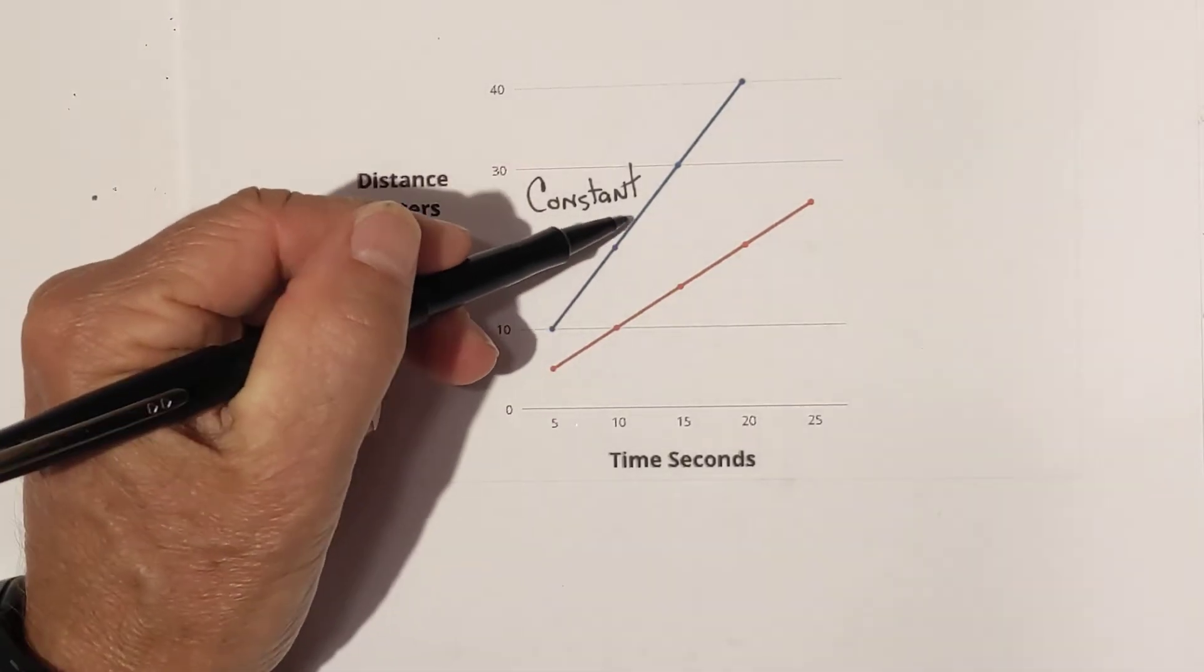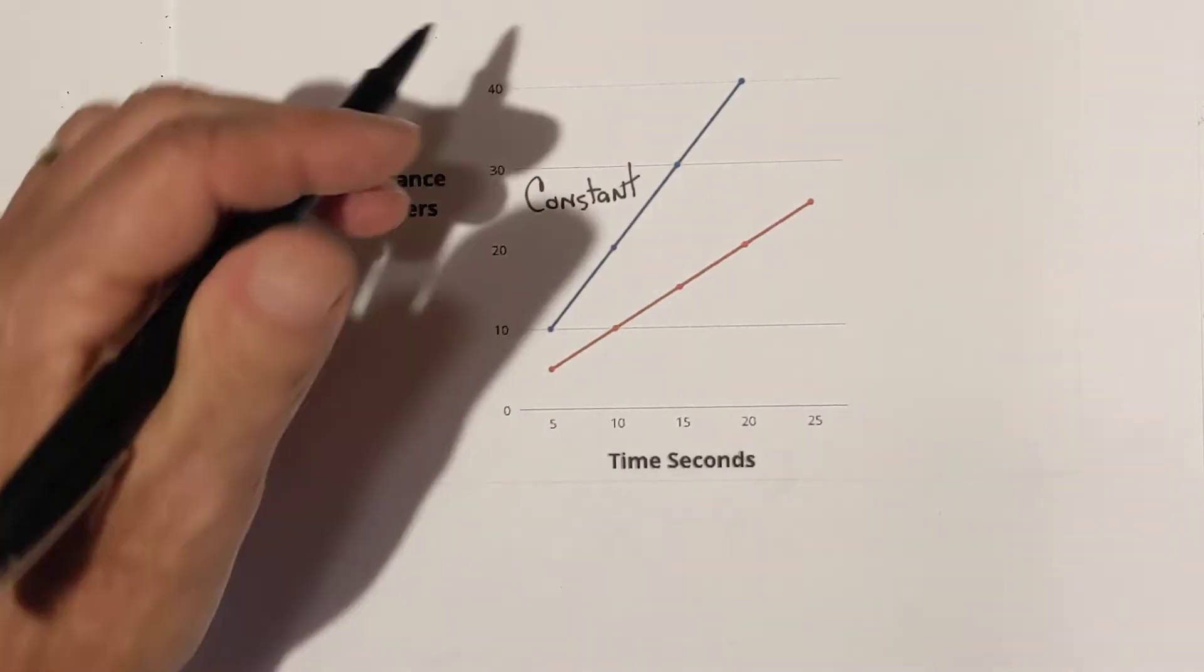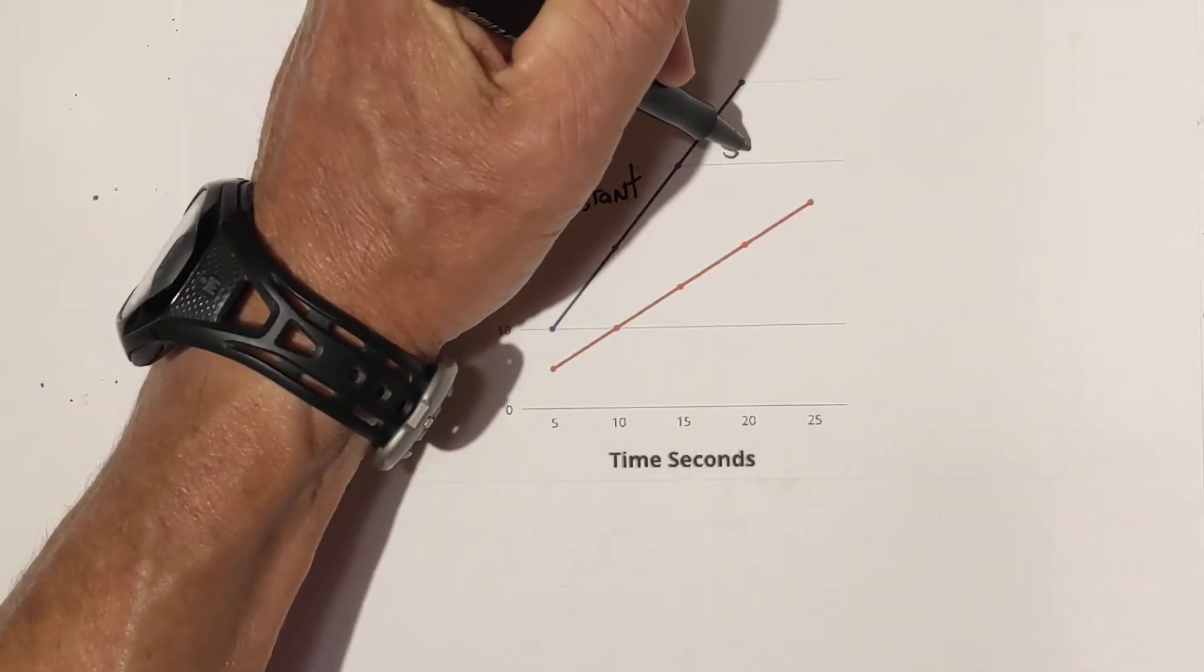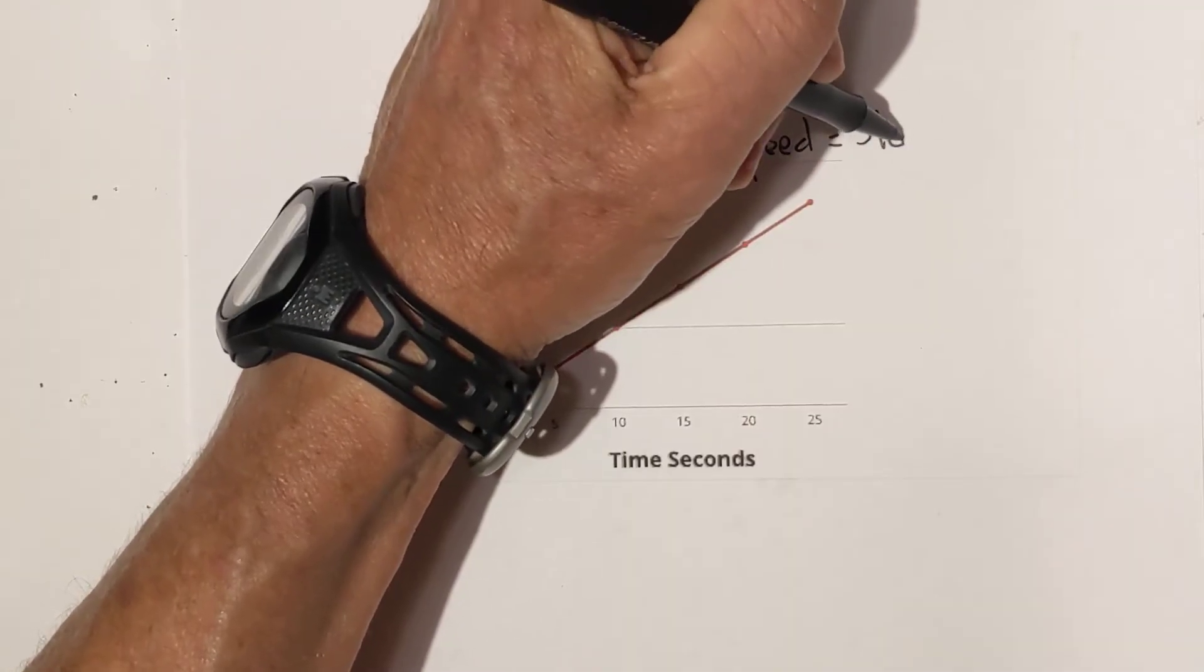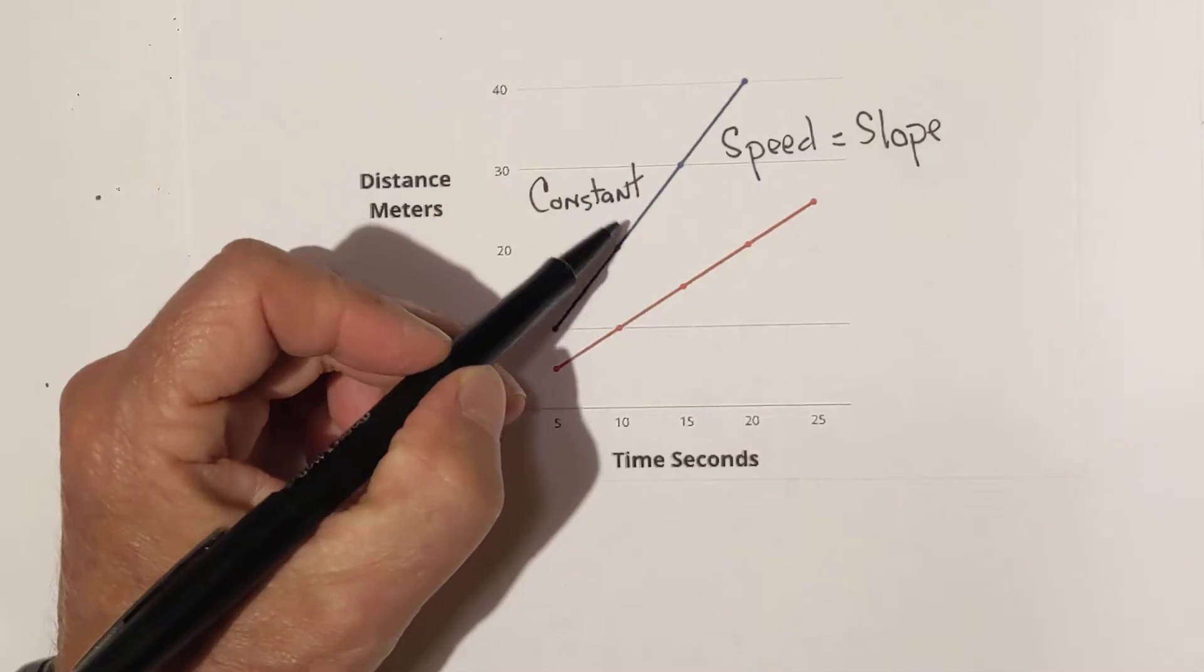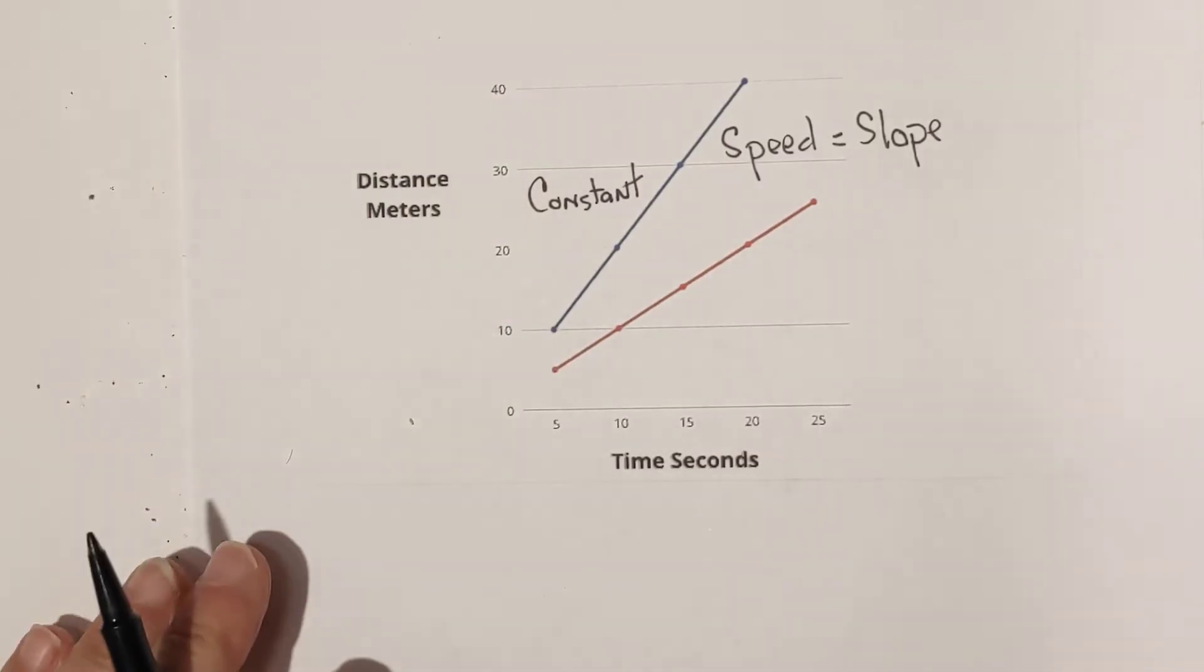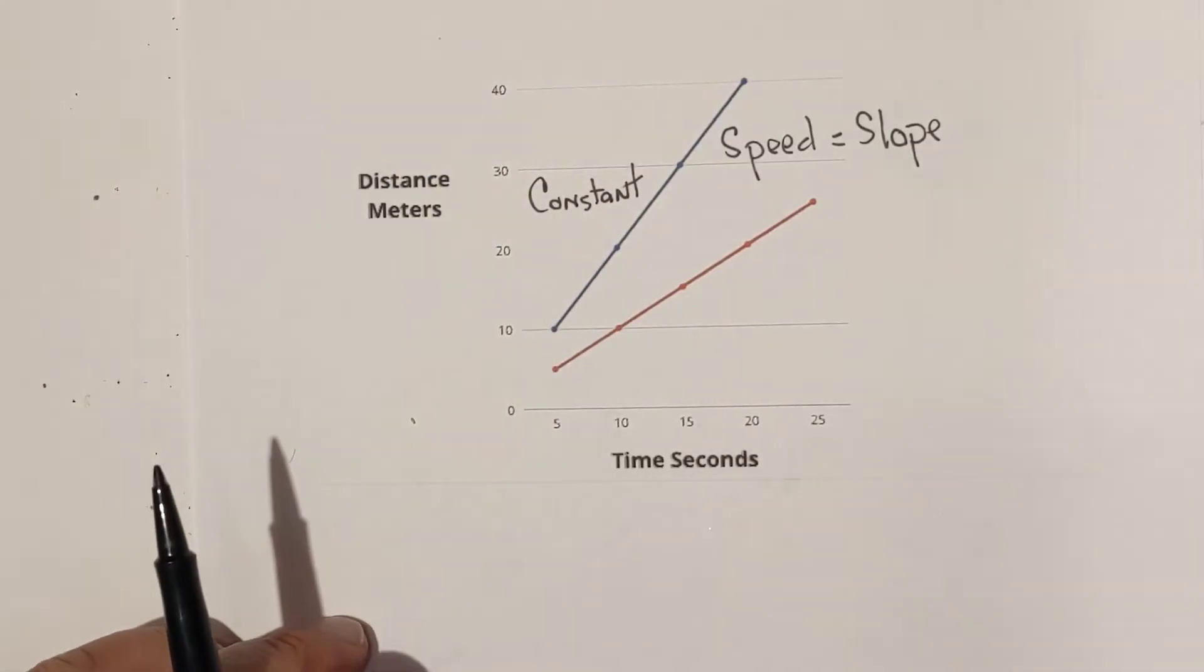Now, which one is the rate of speed greater? Well, the blue. The rate of speed is greater. I'll show you this. Basically, speed equals the slope of the line. I'm going to calculate the slope of each line and then show you that the blue slope or speed is greater than the red slope. So, let me get started on that.